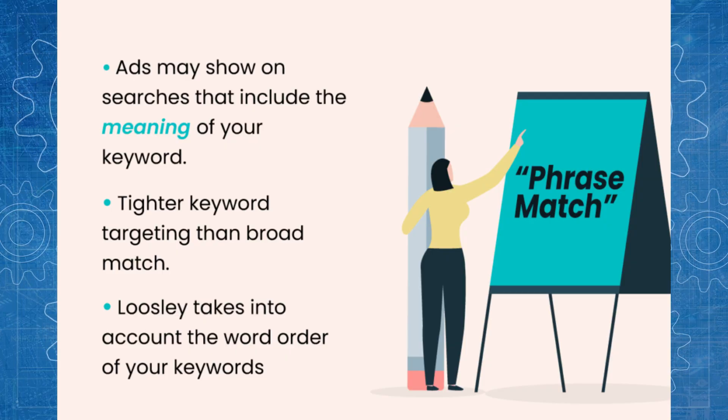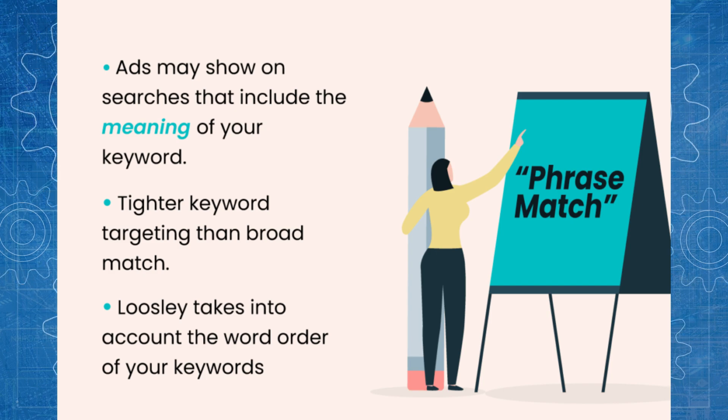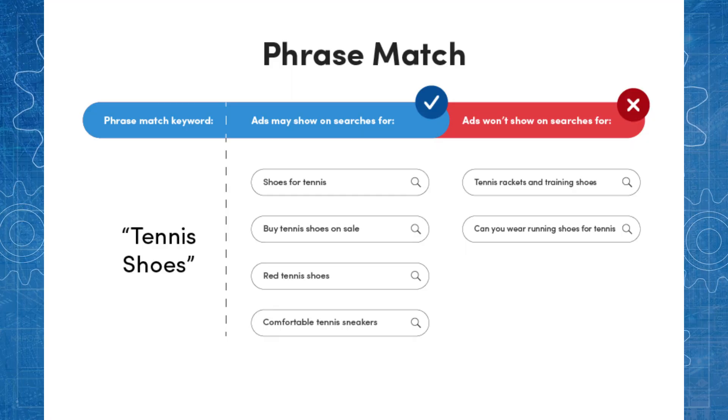Phrase match used to work by ensuring your ads would only show when the user's search term exactly matched the phrase in terms of word order in your keyword. That was why phrase match was called phrase match — the phrase of your keyword had to be in the user's search term. But that is no longer the case. Phrase match now matches to the meaning of a search term, and generally speaking, it's pretty good.